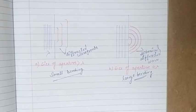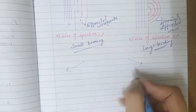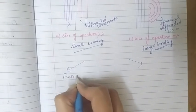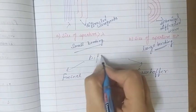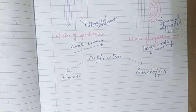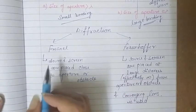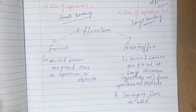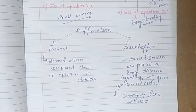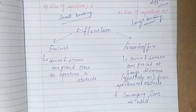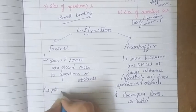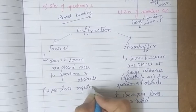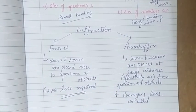Now about the types of diffraction: there are two types — first is Fresnel diffraction, and second is Fraunhofer diffraction. In case of Fresnel diffraction, the source and screen are placed close to the aperture or obstacle. The diffracted light appears converging towards the screen, and no lens is required to observe the diffracted wavefronts on the screen.